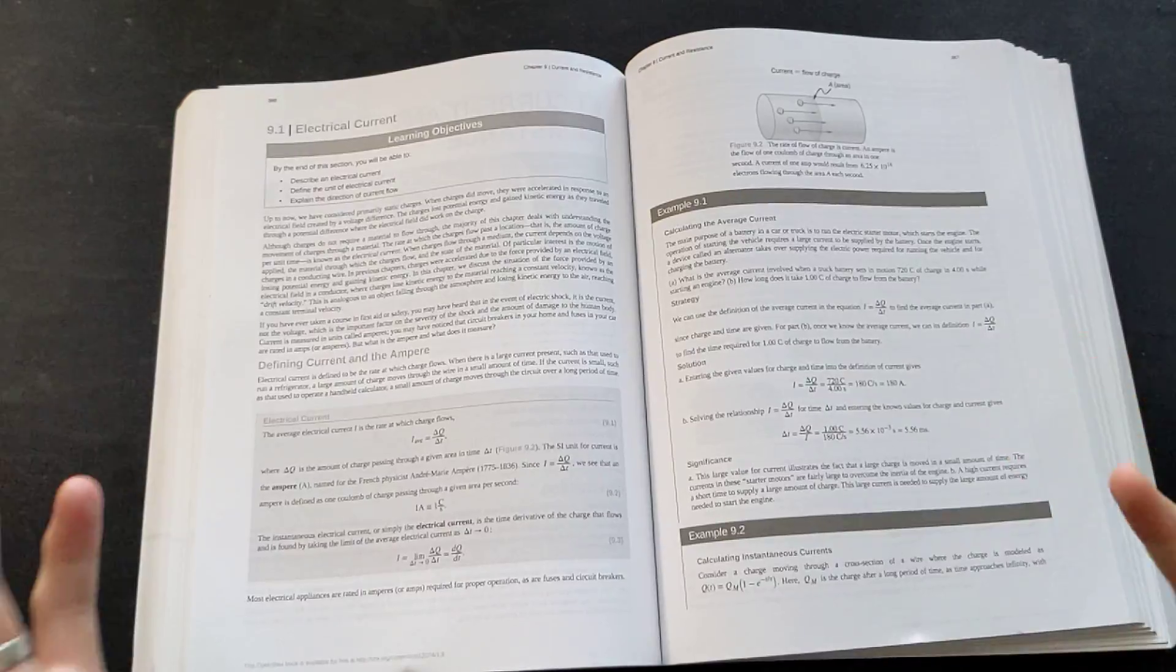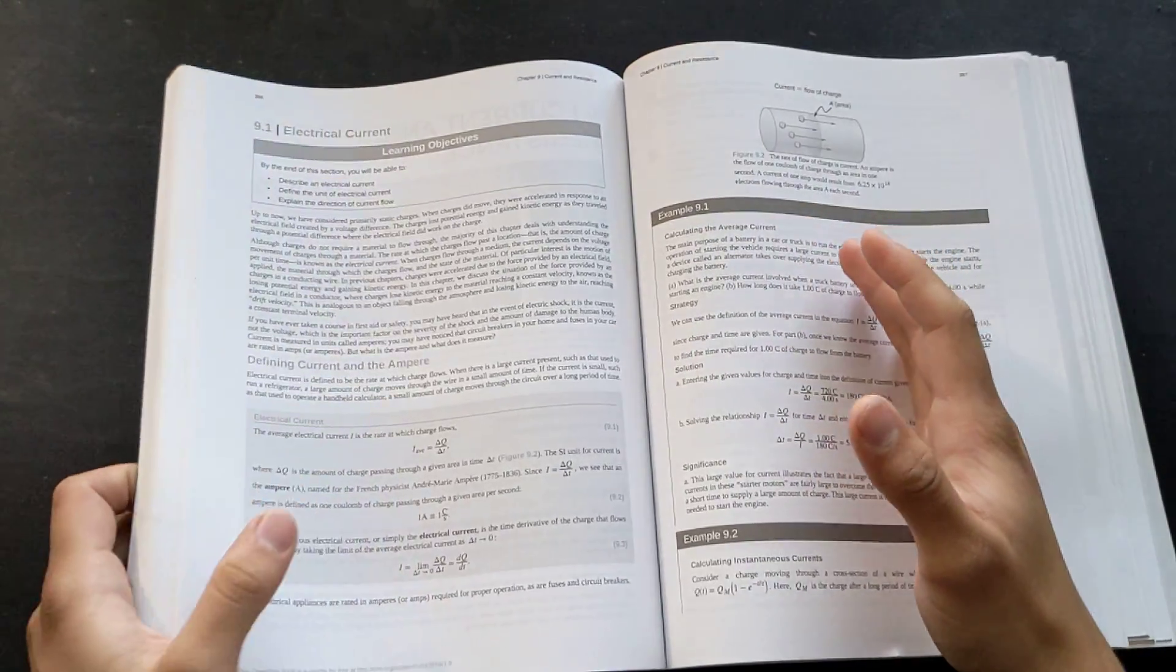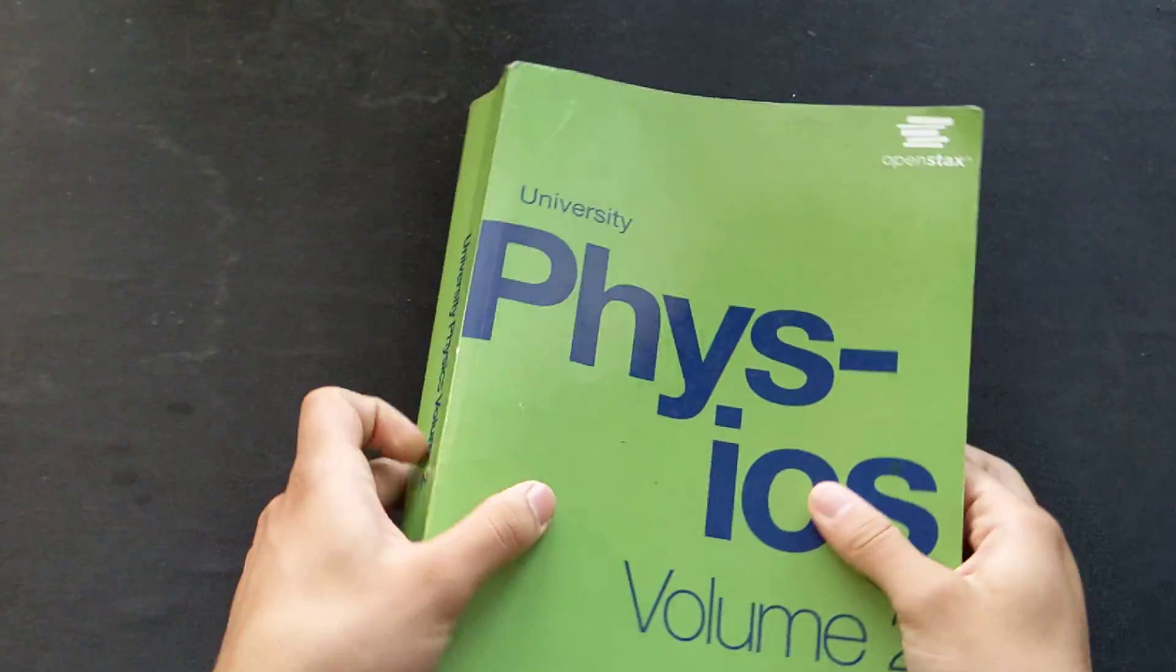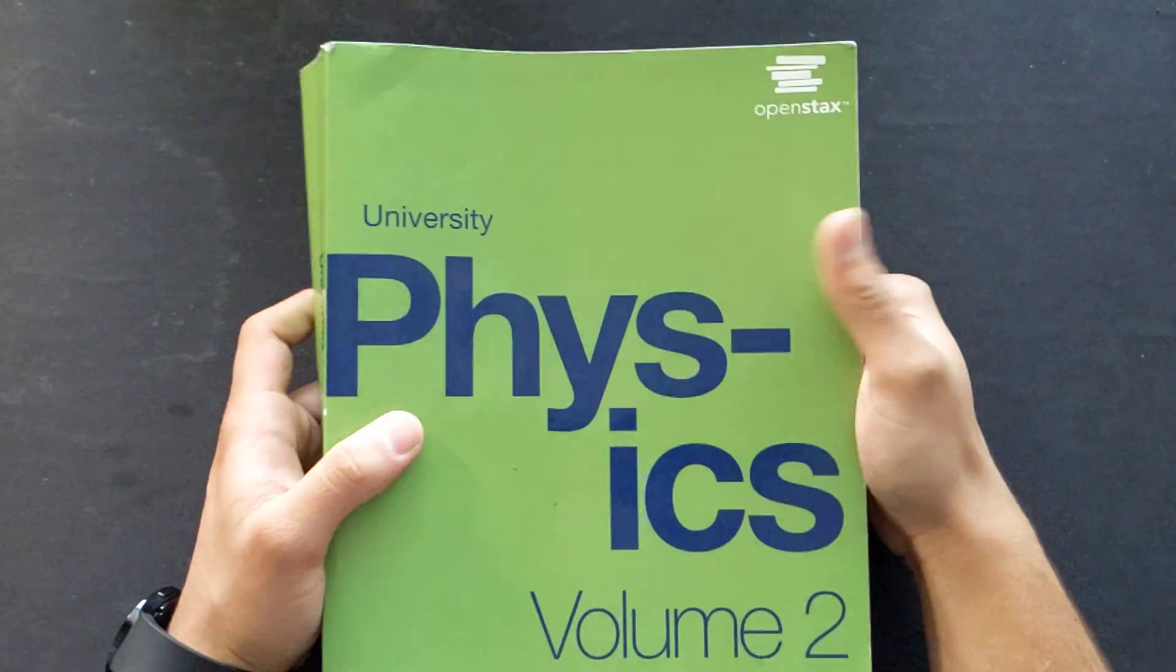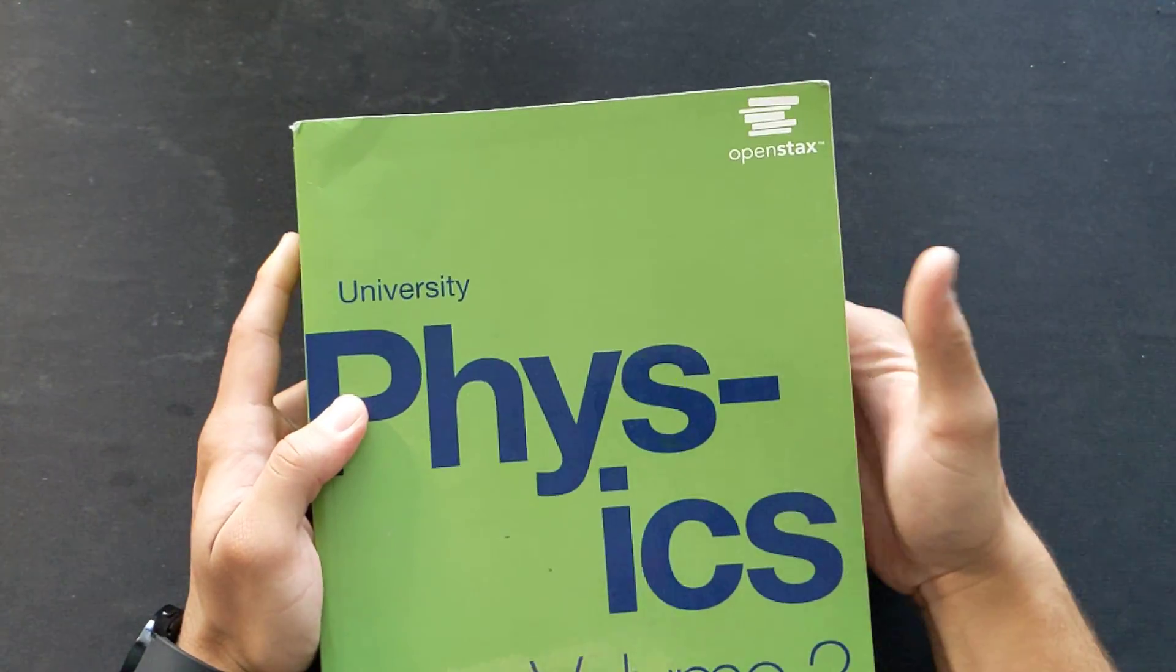E&M is a fascinating subject. So if you want to get into it, what I recommend is to pick up this book right here. This is called University Physics by OpenStax. This is a free textbook initiative out of Rice University.